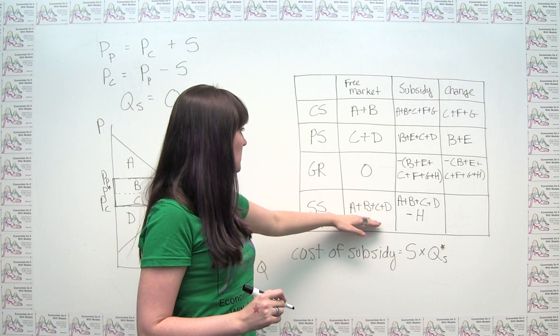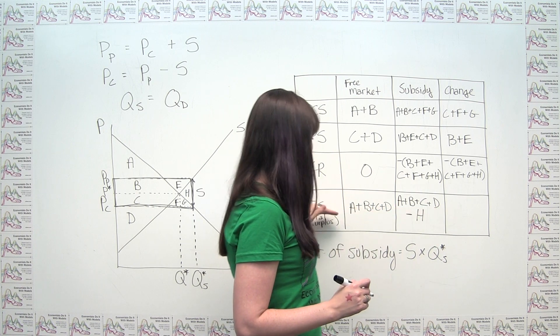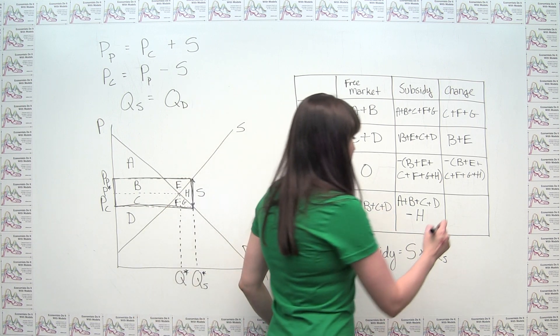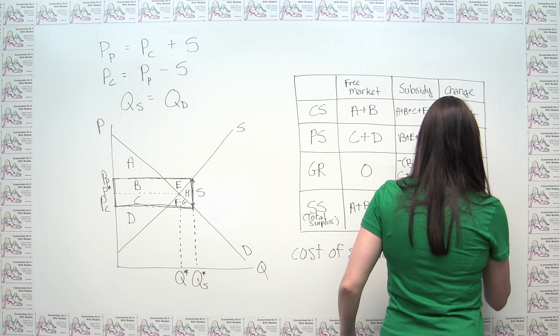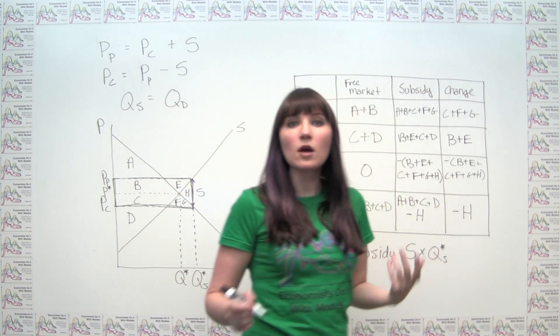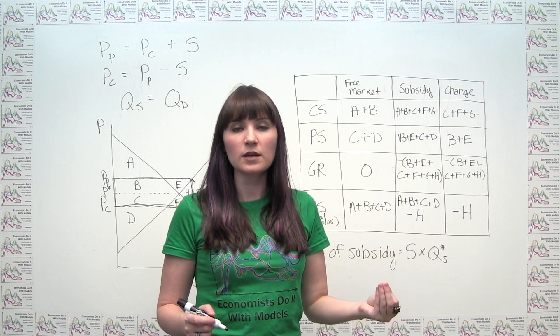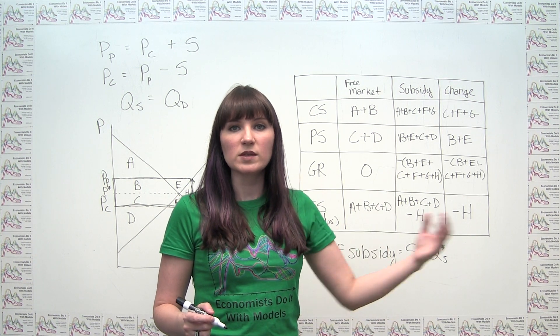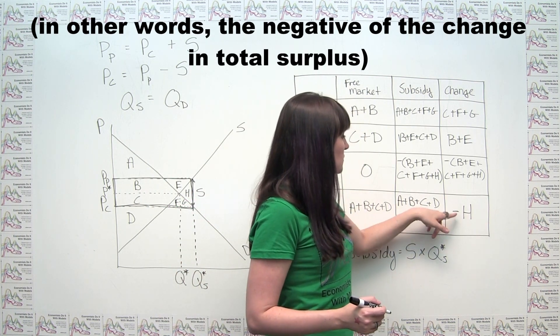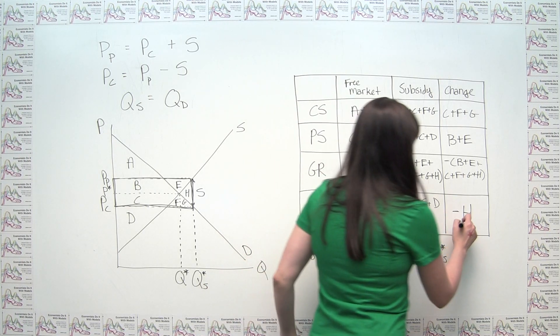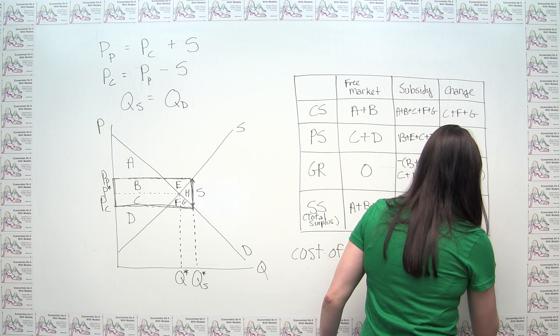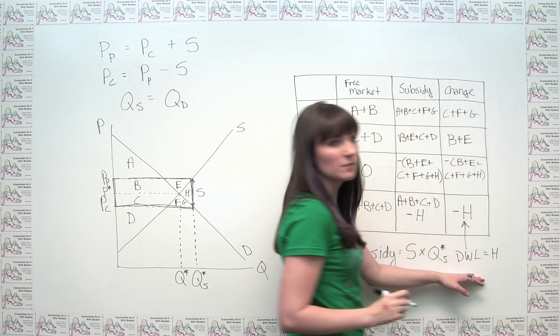And what this means is that our change in total surplus is this minus this. So our change in total surplus is actually negative. And we know that deadweight loss is defined as the reduction in social surplus or total surplus when some sort of regulation is put in place. So by definition, this reduction is in the amount H. And we could say that we then, as a result of our subsidy, get deadweight loss of this amount H.